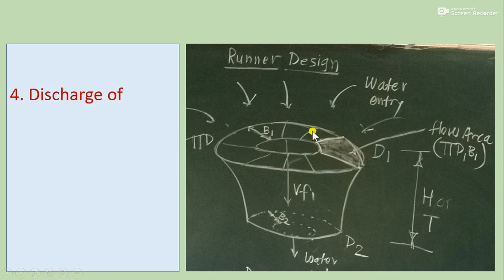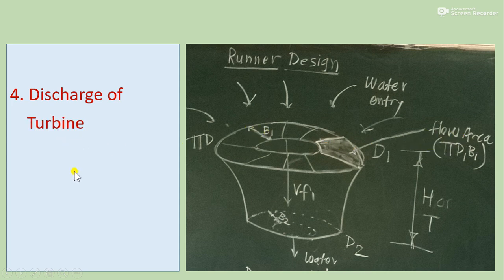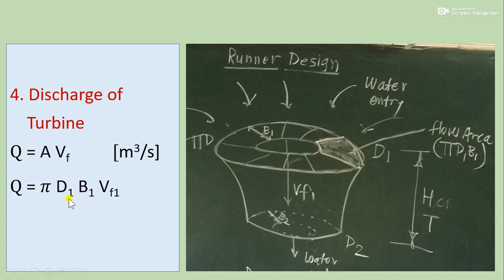The flow area at inlet is π·d1·b1, where π·d1 is the circumference and b1 is the width. Discharge of Francis turbine: Q = π·d1·b1·vf1 in m³/s. At exit this becomes Q = π·d2·b2·vf2.